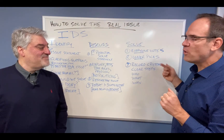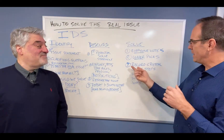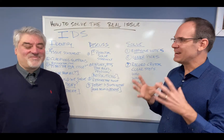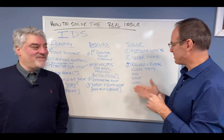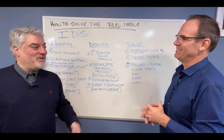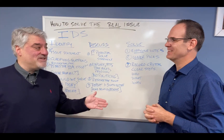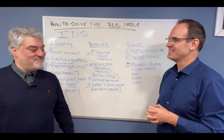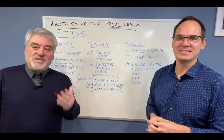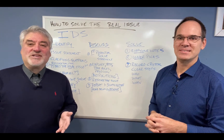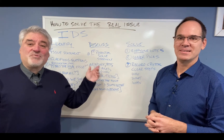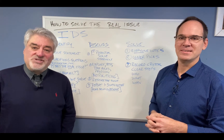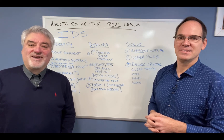And then of course, if you're going to pick a solve, let's record it crystal clear — clarity on next steps: who, what, and when. We've got to know exactly what we decided so everybody's on the same page. This has been Lessons of an EOS Implementer on how to solve a real issue. If you have any further questions, please go to growexceptional.com.